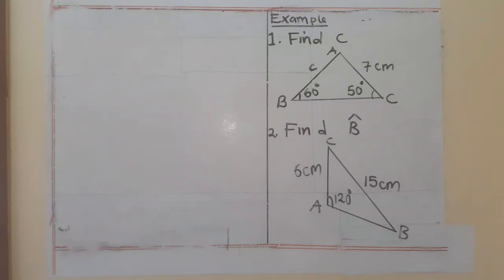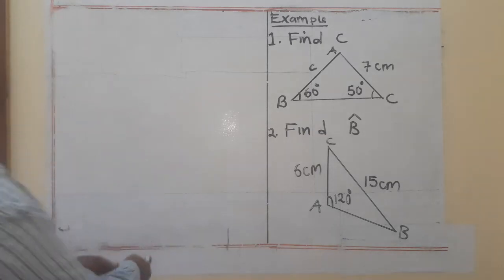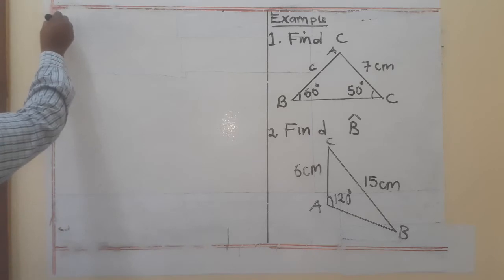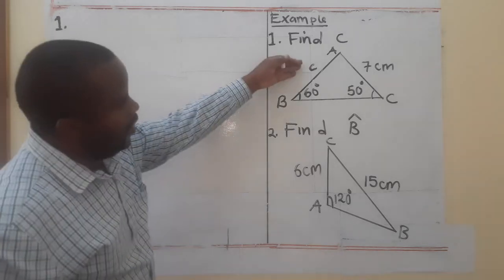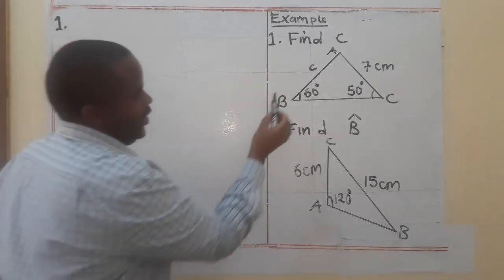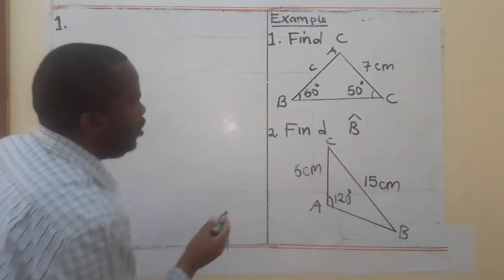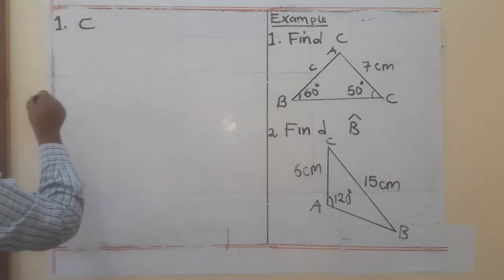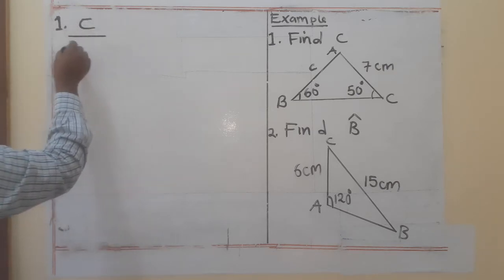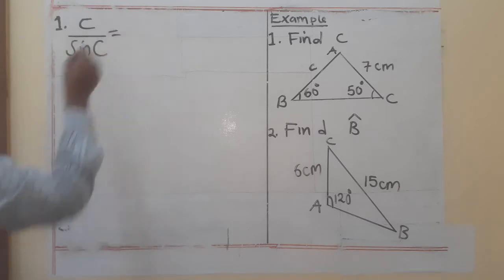Now let's look at how we can find side c and angle B. For number one, we want to find side c. Side c is opposite angle C, so we will set up a ratio using c and angle C.